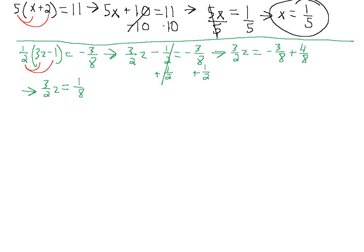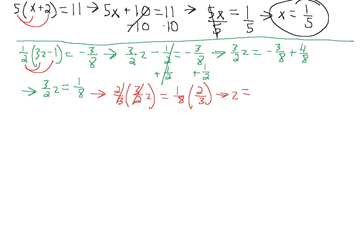We have one step left. We have a rational number multiplied by our variable, so we're going to multiply by the reciprocal. We multiply 3 over 2 by 2 over 3 on both sides — whatever we do to one side, we have to do to the other side. These fractions cancel, leaving us z equals. We're multiplying two fractions: numerator times numerator, denominator times denominator — 1 times 2 is 2, 8 times 3 is 24. We simplify by factoring out a 2, which gives us z equals 1 over 12.